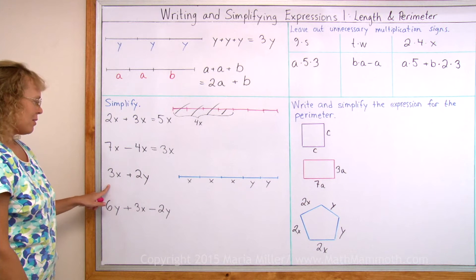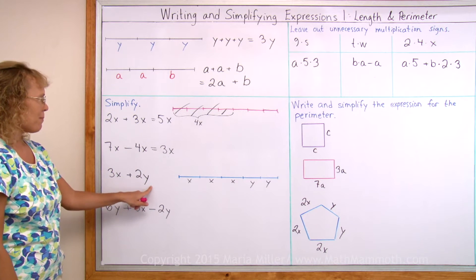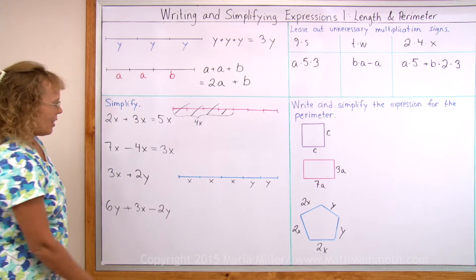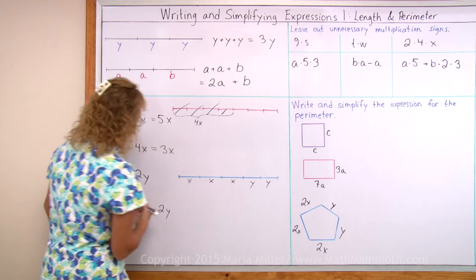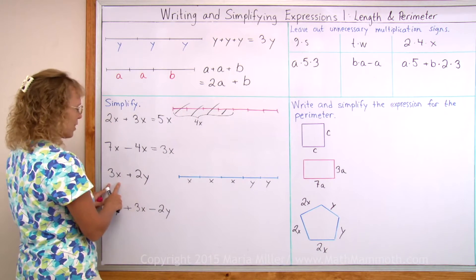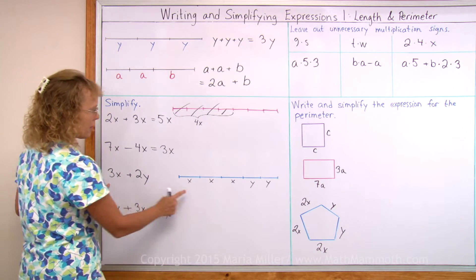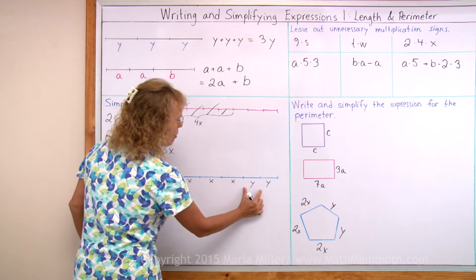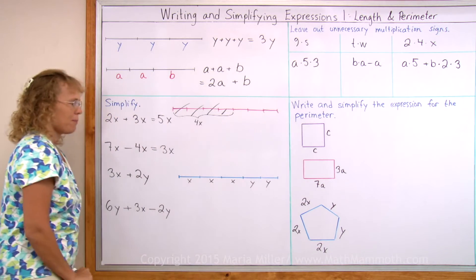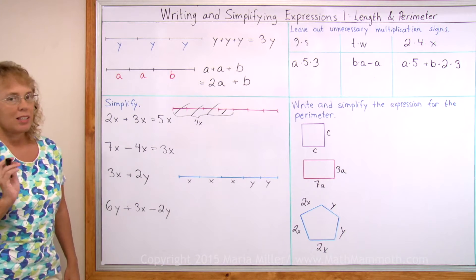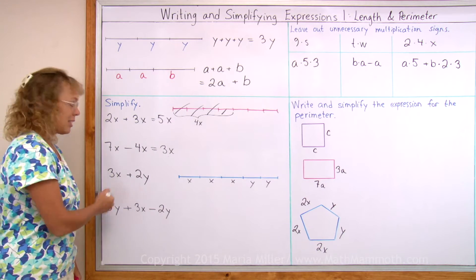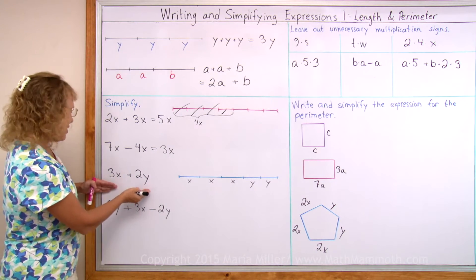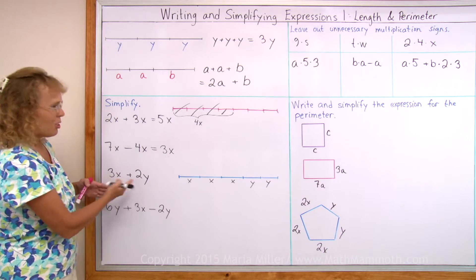How about this one? 3x plus 2y — simplify. I already drew it here as lengths. 3x means x plus x plus x, and then y plus y — a length of y units and another length of y units. Now you cannot actually simplify this any further. It already is in its simplest, shortest form.